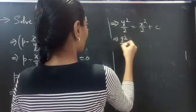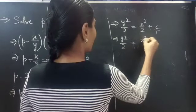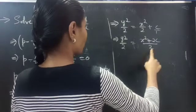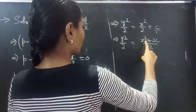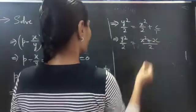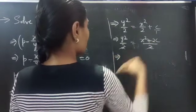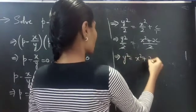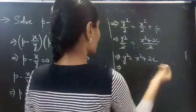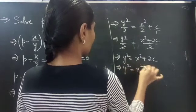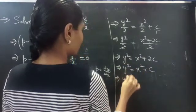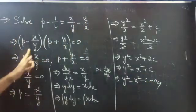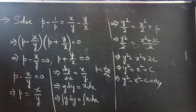Integrating: y squared by 2 equals x squared by 2 plus constant c. Multiplying through and simplifying, y squared equals x squared plus 2c. Since 2c is still a constant, we write it as c. Therefore, y squared minus x squared minus c equals 0 is the solution for P minus x/y equals 0.